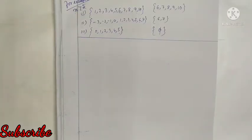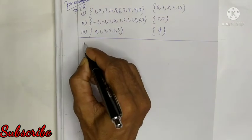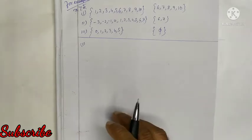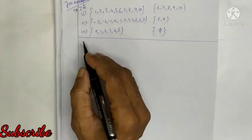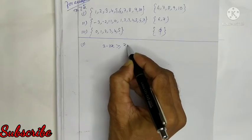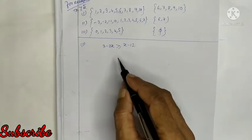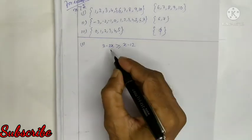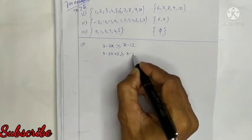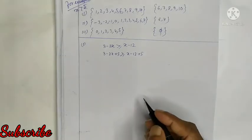Now I will explain the rules for solving linear inequations in one variable. Rule number 1: you can add the same number or expression to both sides of the inequation. For example, given 3 minus 2X greater than or equal to X minus 12, you may add 5 to both sides.